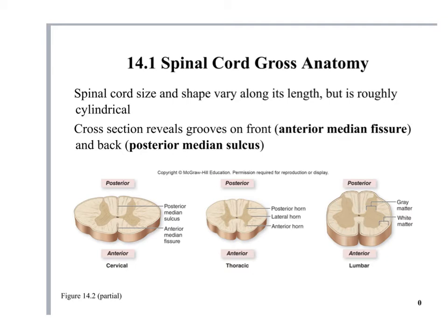The spinal cord's size and shape changes depending on the region — cervical and lumbar enlargements are bigger. The gray matter is always deep and the white matter is always superficial. There is a posterior median sulcus on the back and an anterior median fissure on the front. In the middle is the central canal, which contains cerebrospinal fluid.